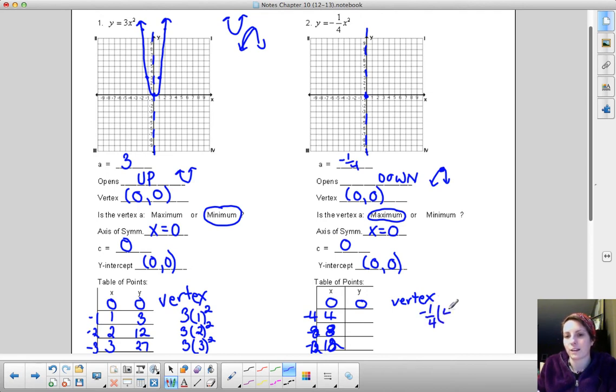Plug it in. Negative 1/4 times 4 squared. 4 squared is 16, times negative 1/4 should give you a negative 4. So at positive 4, negative 4. At negative 4, I also have negative 4. The axis of symmetry reflecting a point. Let's go to that next value. Negative 1/4 times 8 squared. 8 times 8 is 64, times negative 1/4 is 16, should be. So it should be a negative 16. So at 8 we're all the way down at negative 16. Well that's way down here. We can kind of estimate how to put those in.